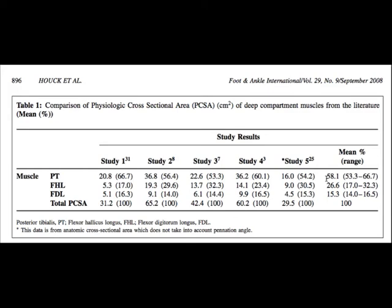In addition to that, the posterior tibialis also has the largest moment arm, and that combination makes it the primary subtalar inverter. It's unlikely that loss of the posterior tibialis, which does occur clinically, can actually be substituted by hypertrophy of the FHL or the FDL. Consider that you'd have to double the size of the FHL, and even in doing so, it doesn't have the same moment arm — so even doubling the size wouldn't result in a fully functioning muscle equivalent to the posterior tibialis.